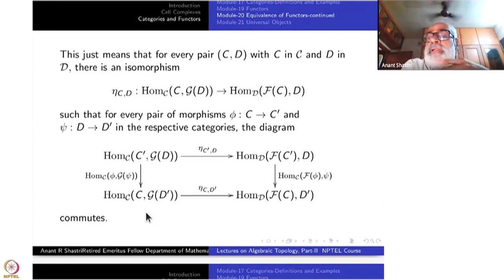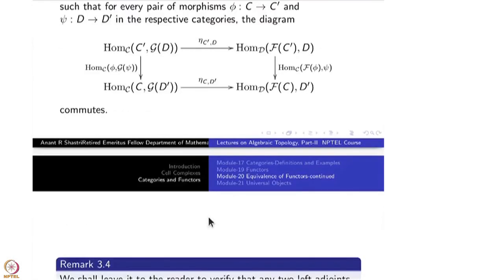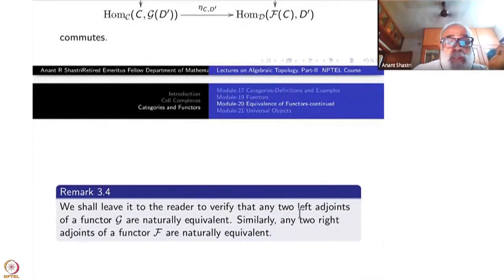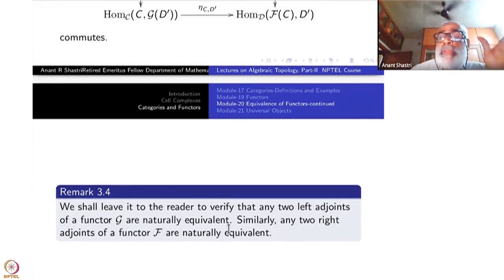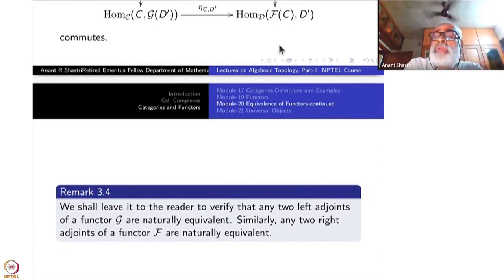Then you will see that you have told so many things in one single shot. I shall leave it to the reader to verify that any two left adjoint functors to the same F and G are naturally equivalent. This is not a very difficult exercise, but the difficulty is that you may not know what to do with this kind of thing. You may be very well in computing — familiar with that kind of mathematics — but not this kind.